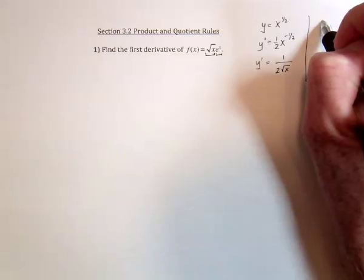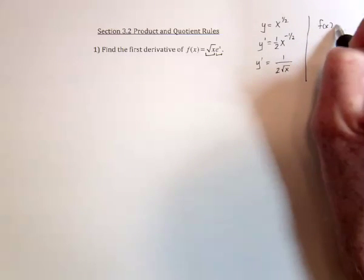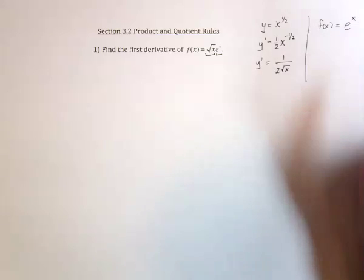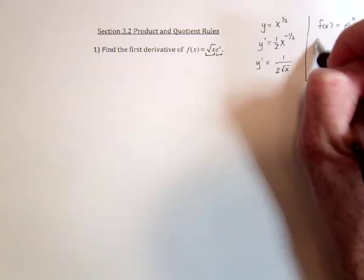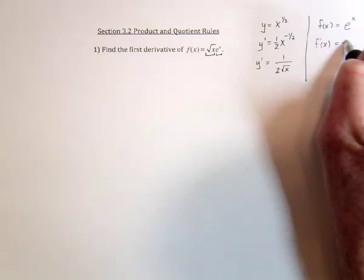And then if we had a function equal to e to the x, then we could take the derivative of that. Well, that's the easiest derivative there is. It is just itself.